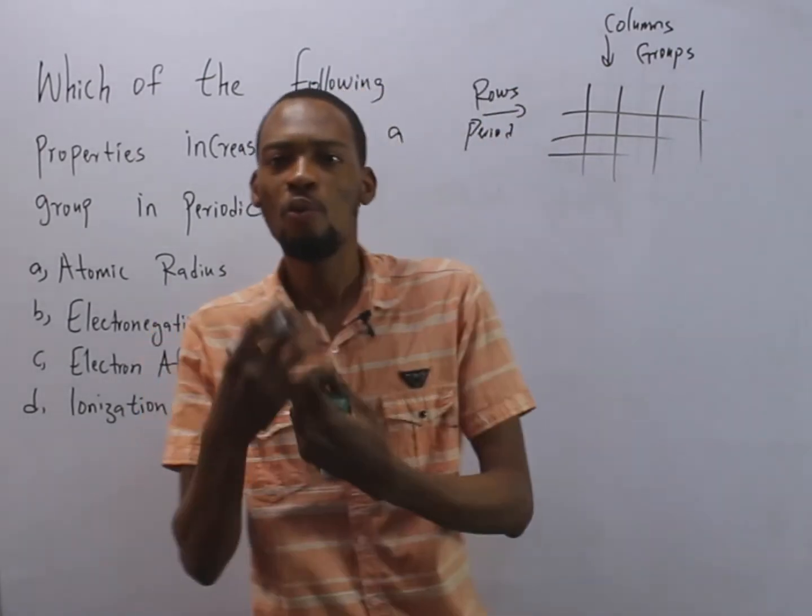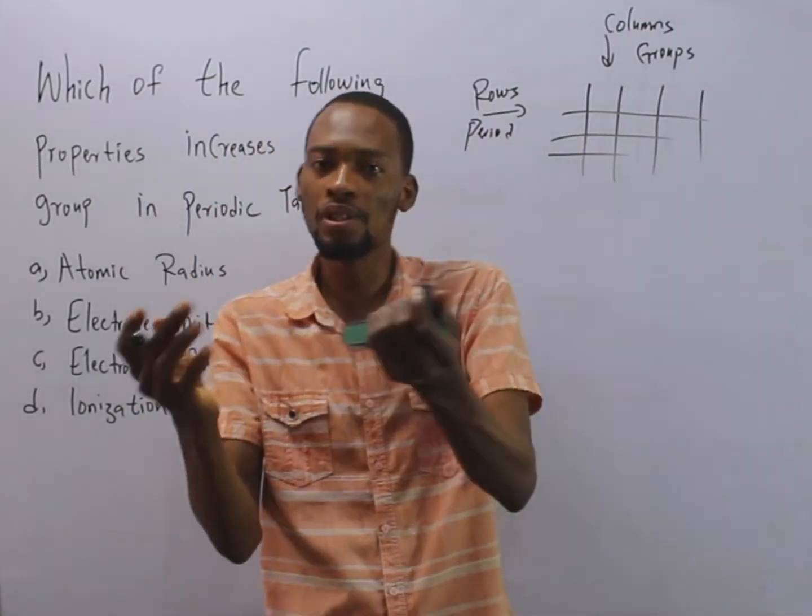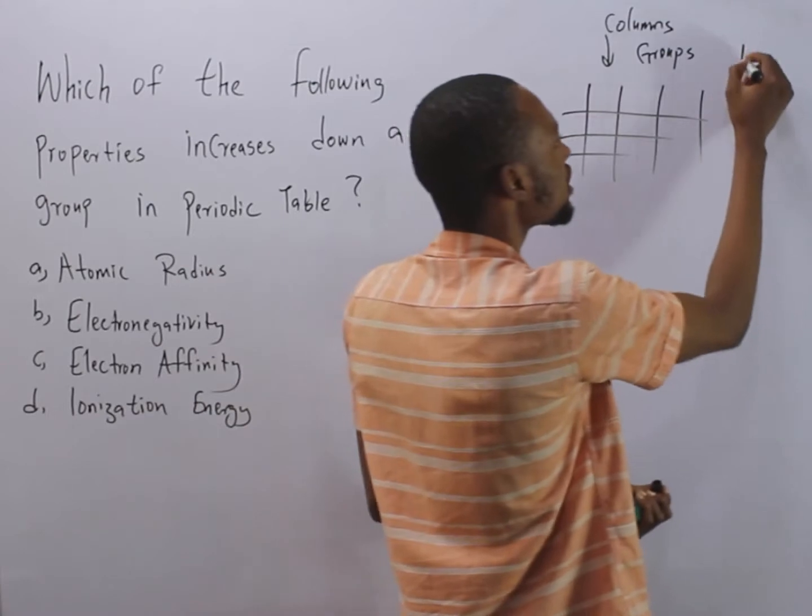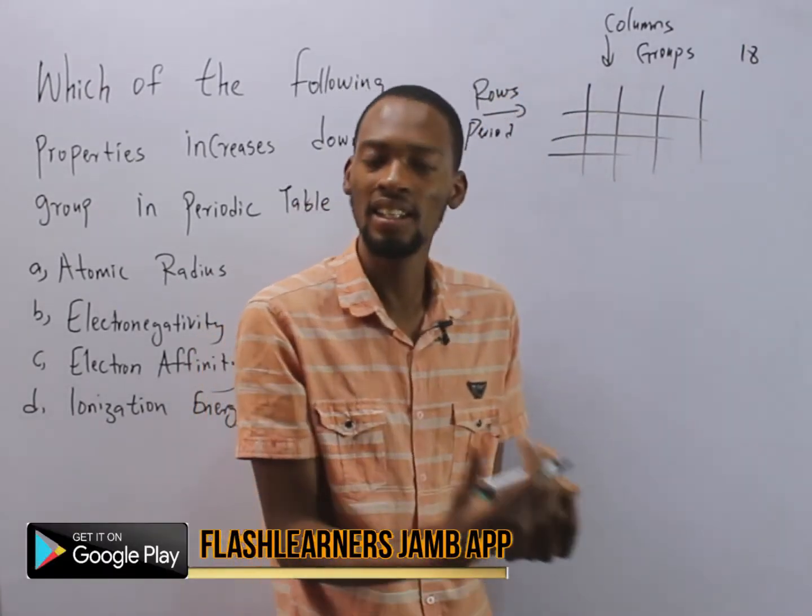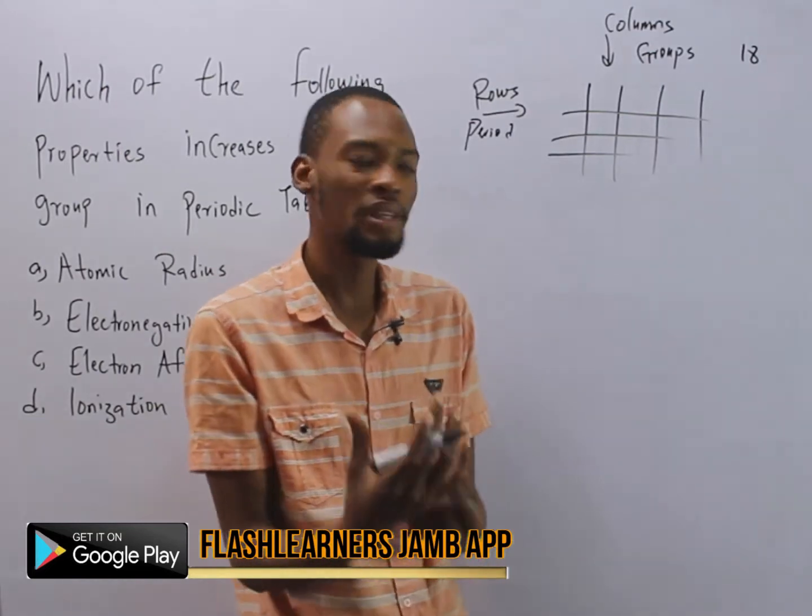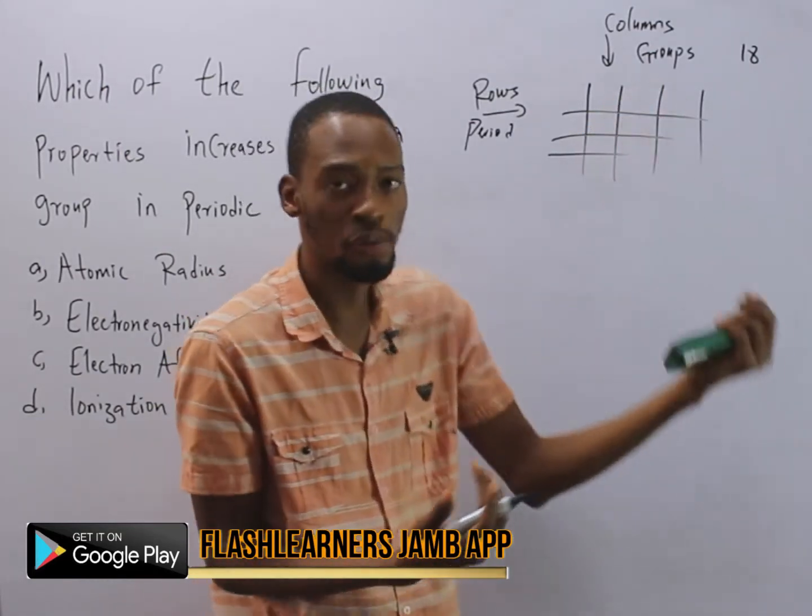In periodic table, we have up to 18 groups. So that means you have group 1, group 2, group 3, group 1A, group 2A, group 1B and so on, up to 18 groups.